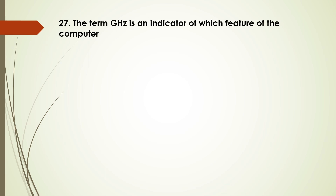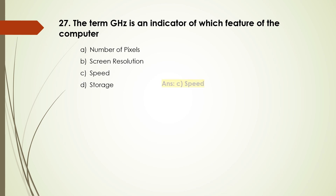Question number 27: The term gigahertz is an indicator of which feature of the computer? Options are: number of pixels, screen resolution, speed. The answer is C, speed.